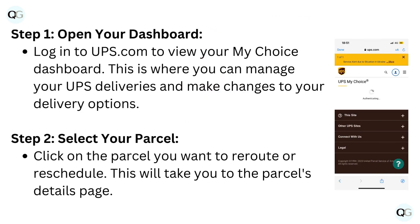Step 1: Open your dashboard. Log in to UPS.com to view your MyChoice dashboard. This is where you can manage your UPS deliveries and make changes to your delivery options.